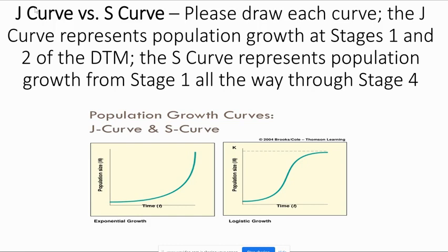That J-curve represents stages one and two of demographic transition. Eventually, as countries urbanize, women get more education and access to birth control, the birth rate comes down until it levels out into an S-curve. If we continue that S-curve, it would actually start dipping down — that's the key difference between the J-curve and the S-curve.